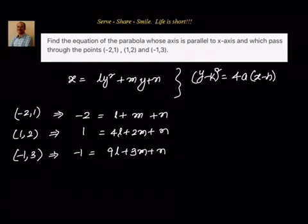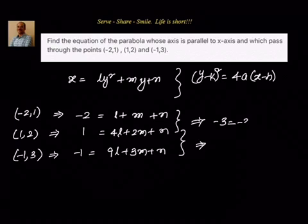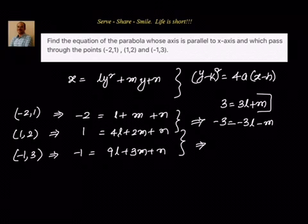We simplify by subtracting the first equation from the second. This cancels n and gives us: minus 3 equal to minus 3l minus m, or equivalently, 3 equal to 3l plus m. This is our first reduced equation in l and m.